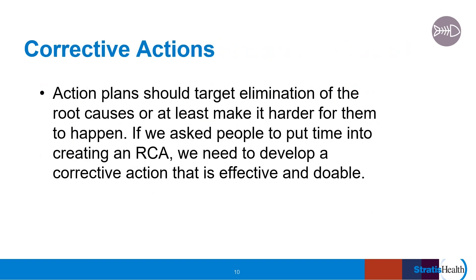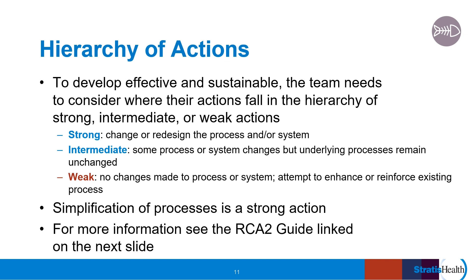Corrective action plans should target elimination of root causes or at least make it harder for them to happen. It is not uncommon for a team to go through the RCA process only to come up with a corrective action that includes re-education, reminding people to look for warning signs, or telling people to be more careful. These types of corrective actions are rarely effective or sustained. Education is only useful as an intervention if you have documented through your RCA that the event occurred because of lack of knowledge or skill. For the team to develop actions that will be effective and sustainable, the team needs to consider where their actions fall in the hierarchy of strong, intermediate, or weak actions.